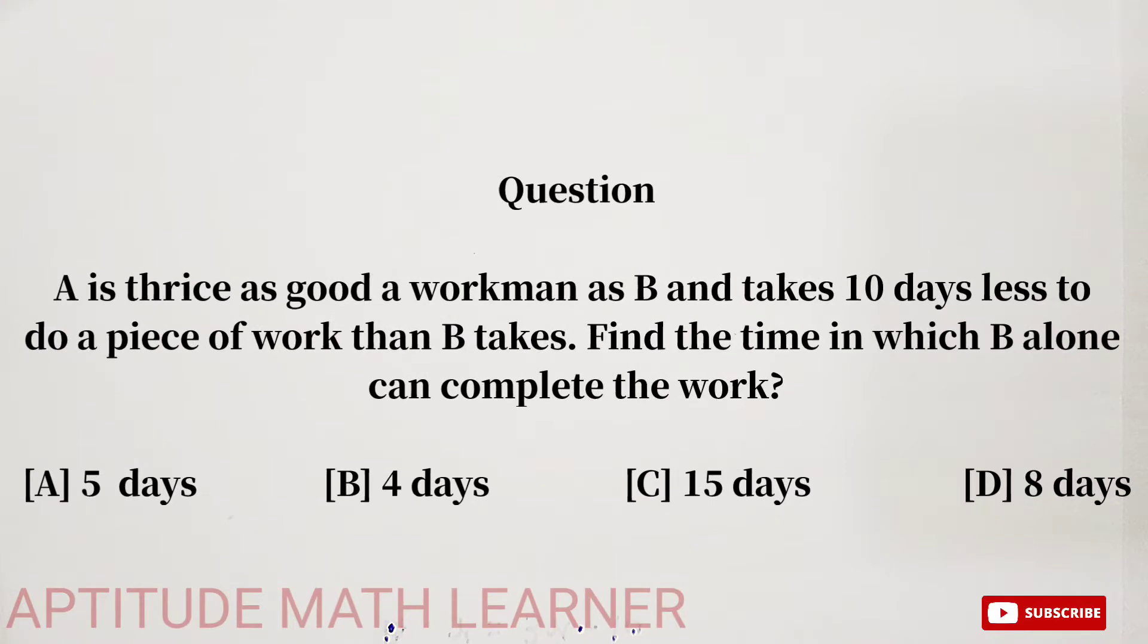Welcome friend to my YouTube channel Aptitude Math Learner with a new interesting question. The question today is: A is thrice as good a workman as B and takes 10 days less to do a piece of work than B takes.